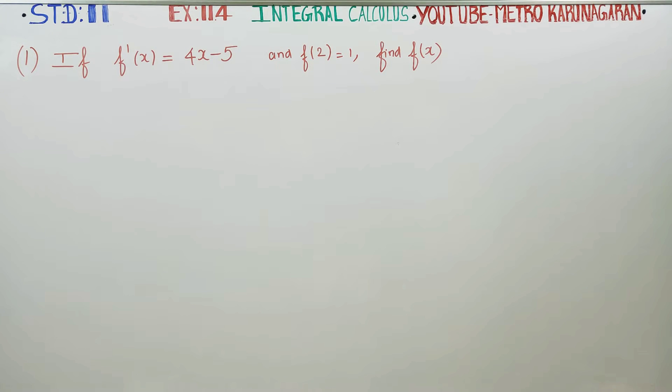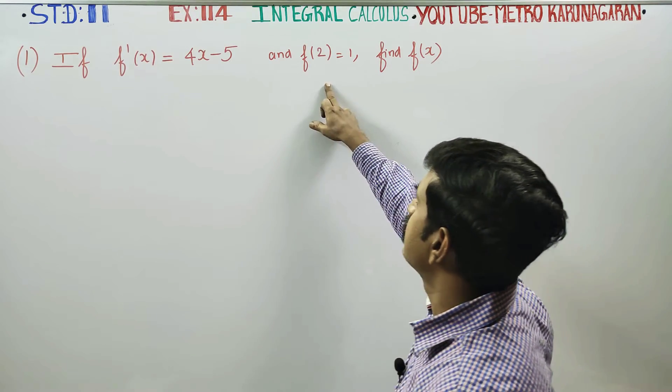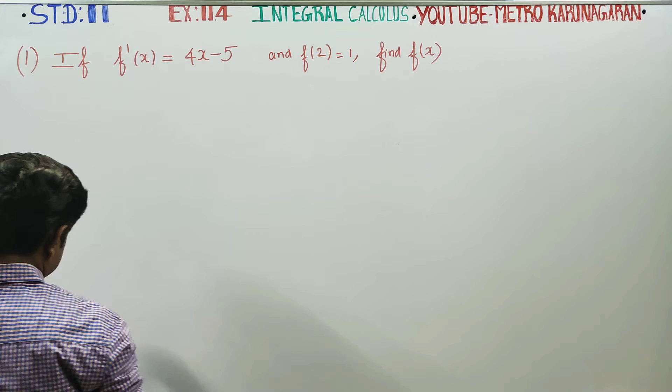Dear Level 11 standard students, in integral calculus, exercise number 11.4, sum number 1: If f'(x) is equal to 4x minus 5 and f(2) is equal to 1, find the function f(x).